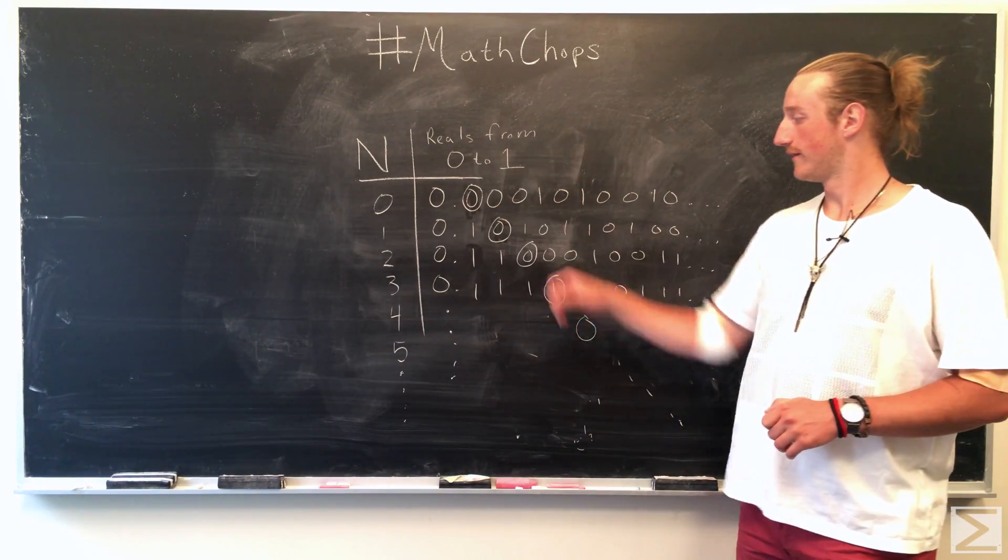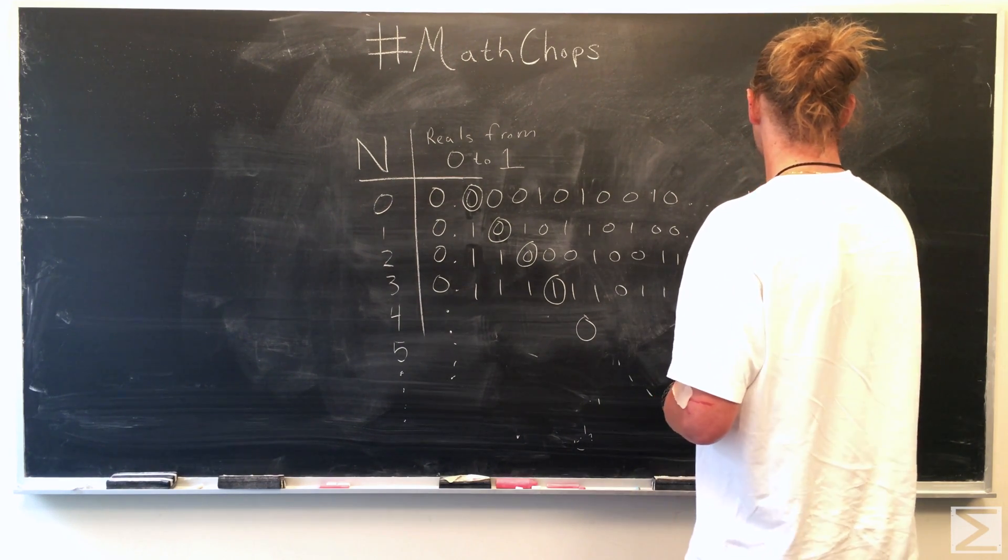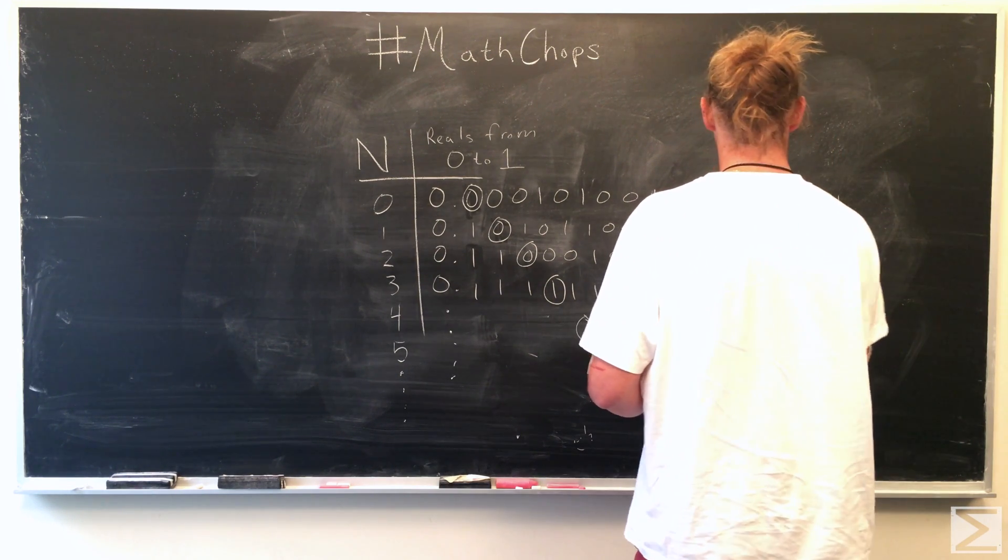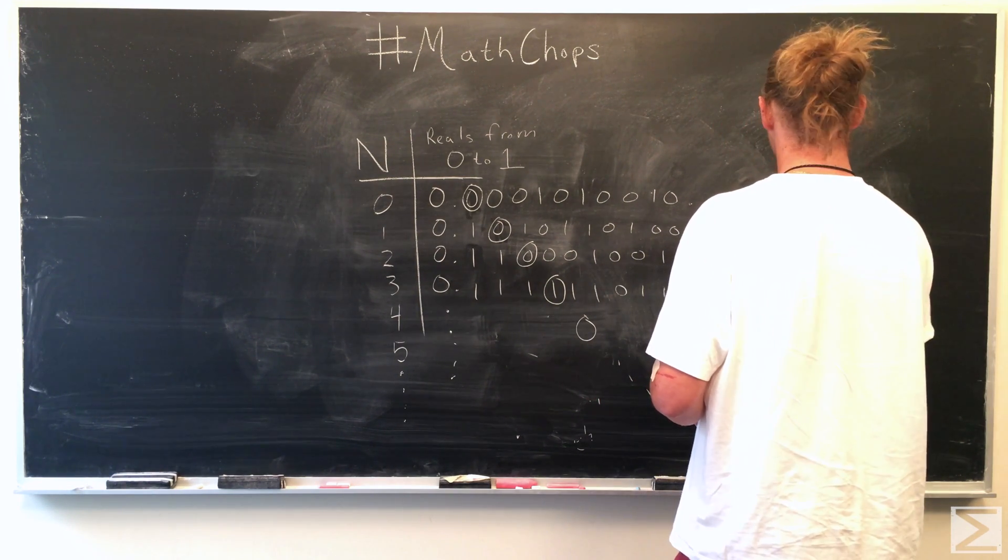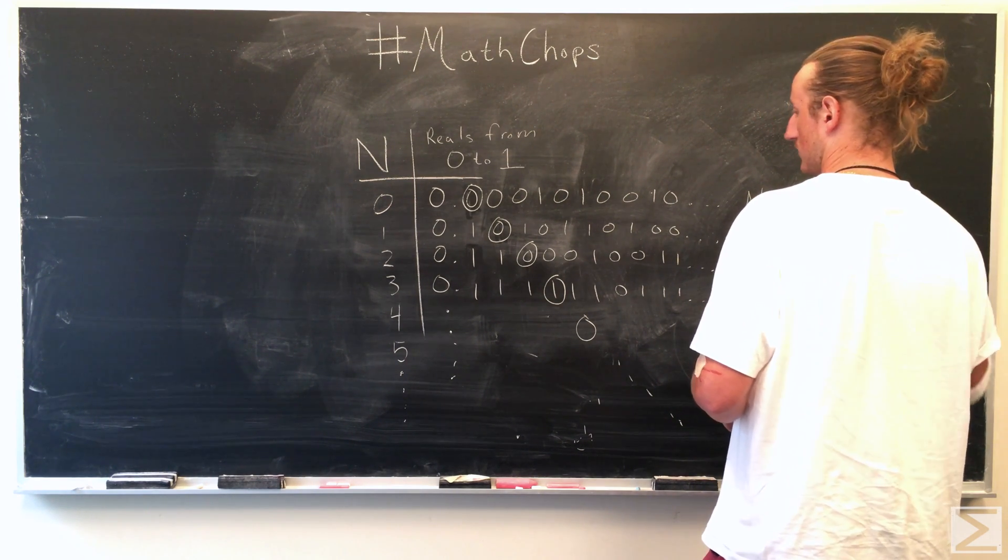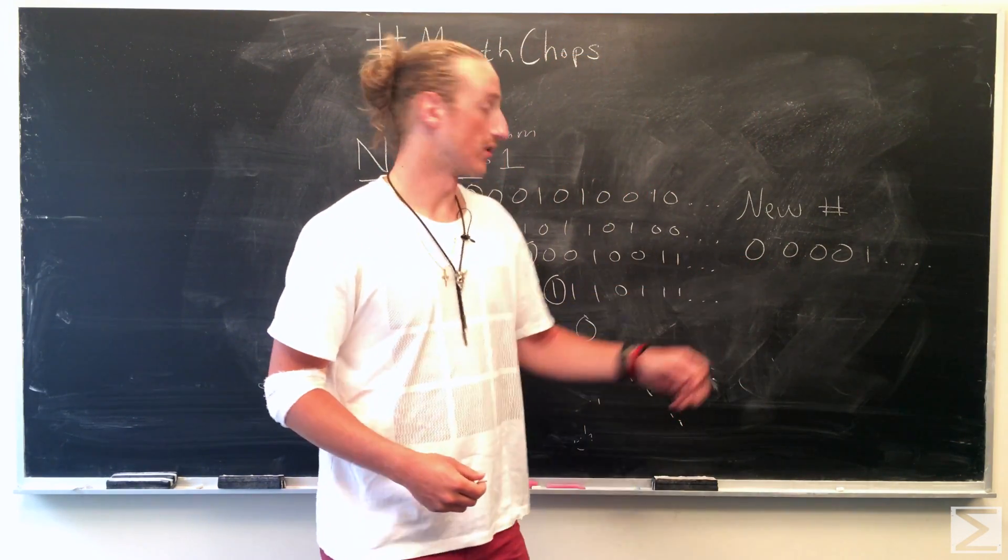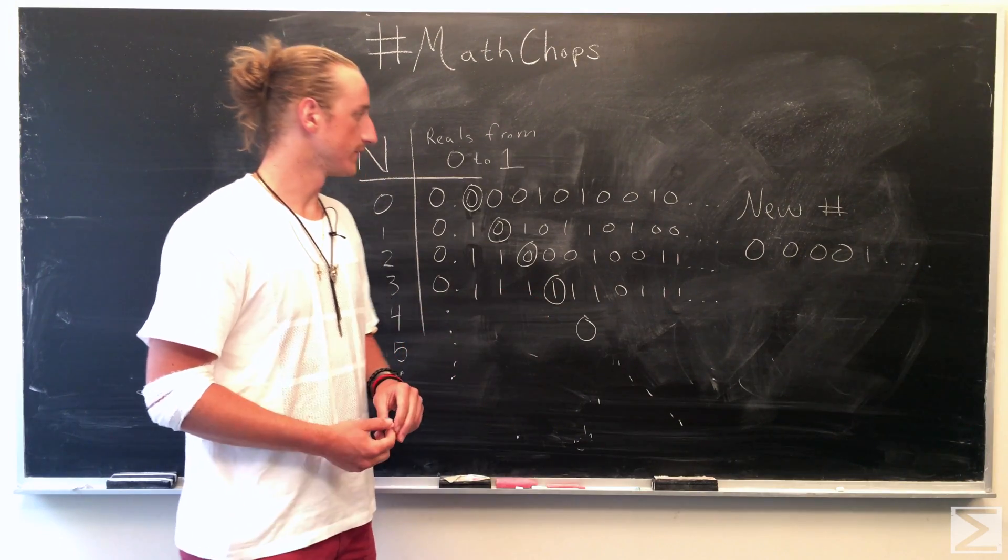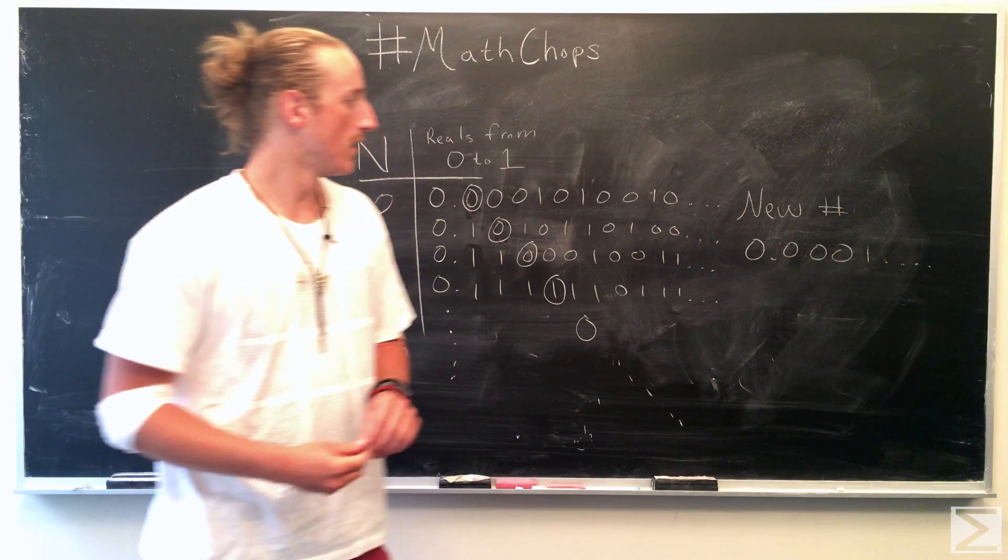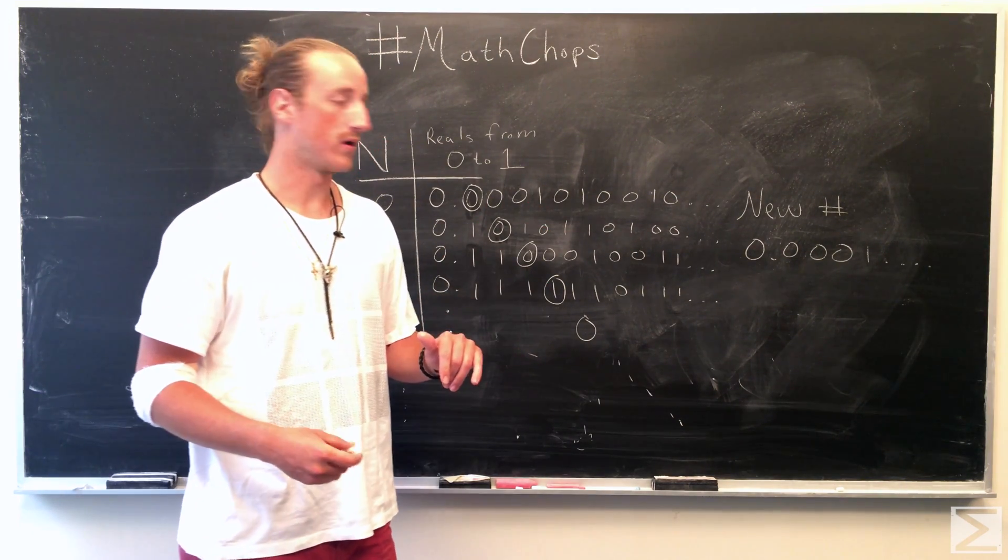And then looking at these diagonals, we can create a new number. And so this new number, which was created from the diagonals, is 0.0001. And then after finding this number, you would swap every zero with a one and every one with a zero.